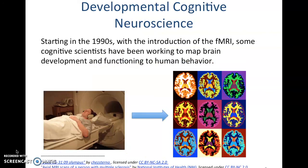The final theory is developmental cognitive neuroscience, which emerged from the surge in technologies such as fMRIs from the 1990s through current times. Scientists are actively working to map the brain to behavior and development.